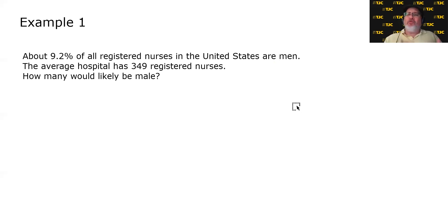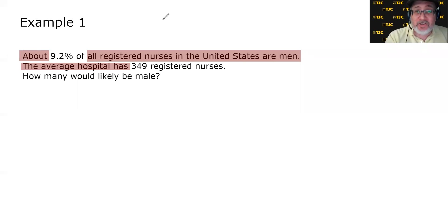To make my point, let's take a look at this one and see what we're really being asked to find by pruning a lot of the words. 9.2%, well, we really don't need the word about. I'm going to cover up some words. 9.2% of all registered nurses, but we're told that the average hospital has 349 registered nurses. So instead of saying of all registered nurses, let's just say 9.2% of 349 registered nurses. And then we're basically being asked to find that. So really, if you boil it down, all we're being asked to do is answer the question: 9.2% of 349 is what?